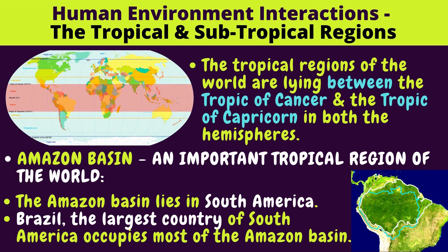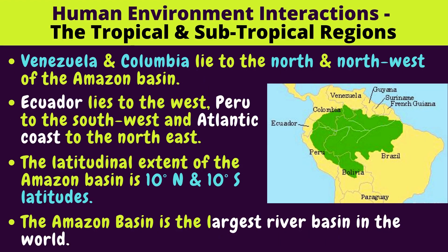Amazon Basin — it is an important tropical region of the world. The Amazon Basin lies in South America. That dark green area with the blue outline on the map is the Amazon Basin. Brazil, the largest country of South America, occupies most of the Amazon Basin. Venezuela and Colombia lie to the north and northwest of the Amazon Basin.